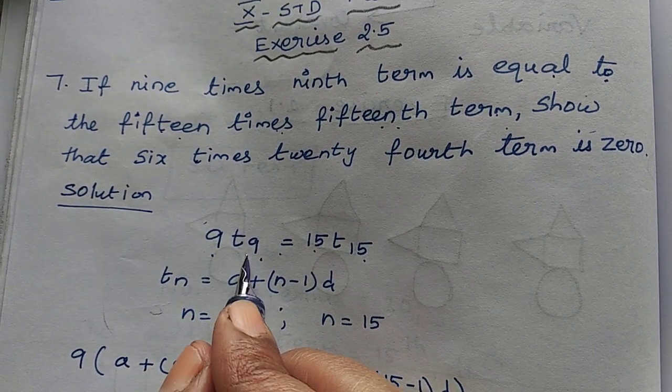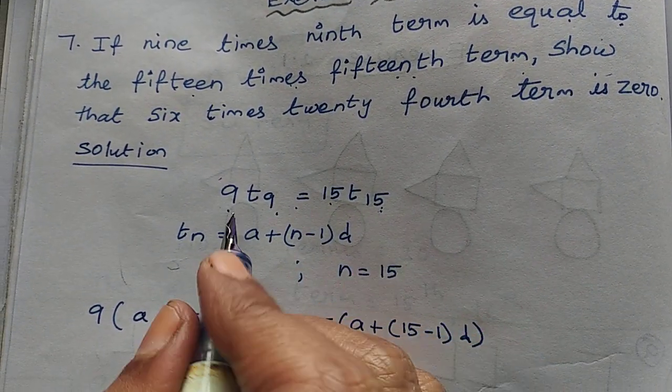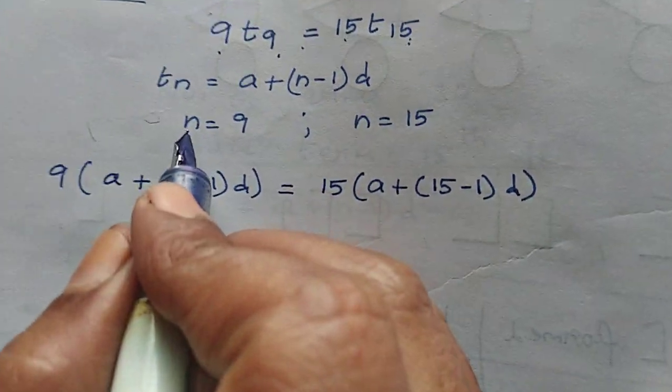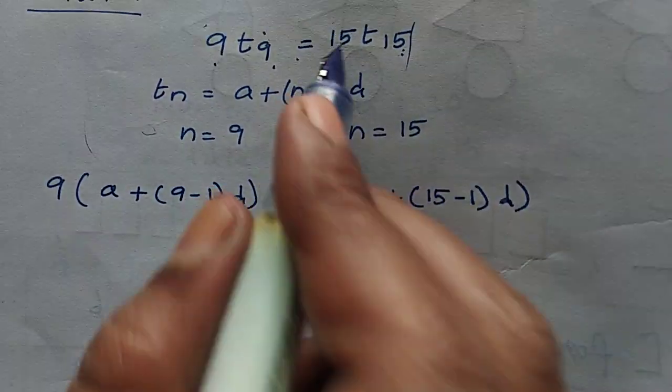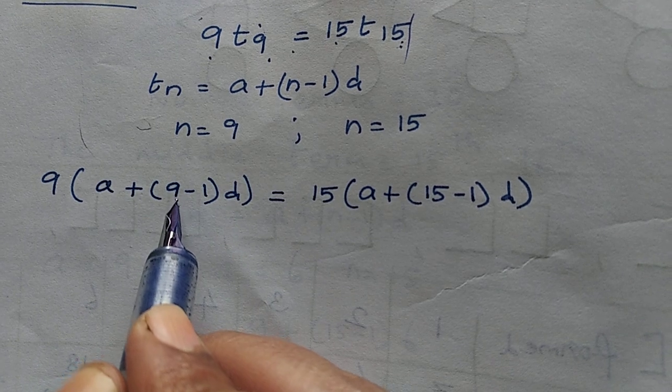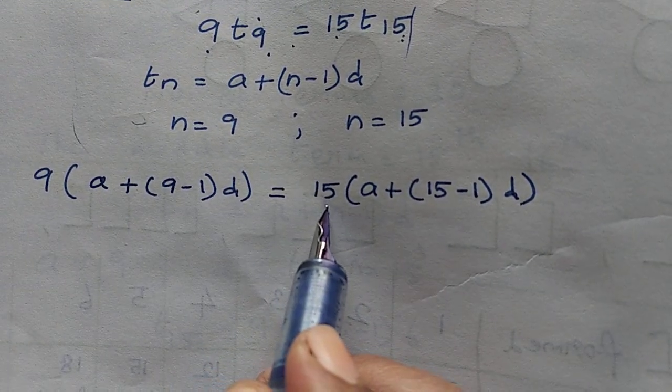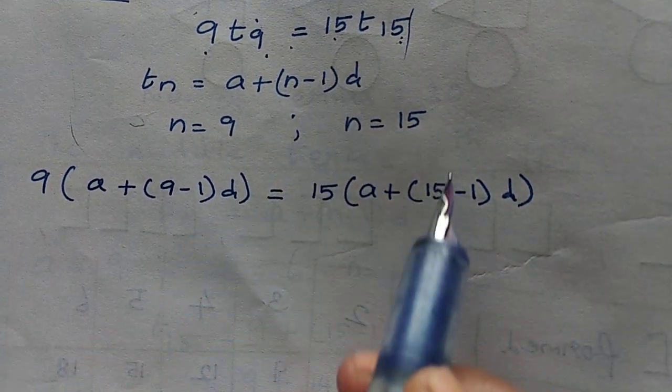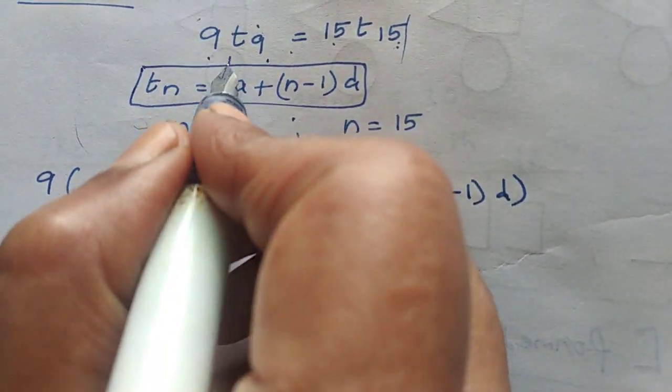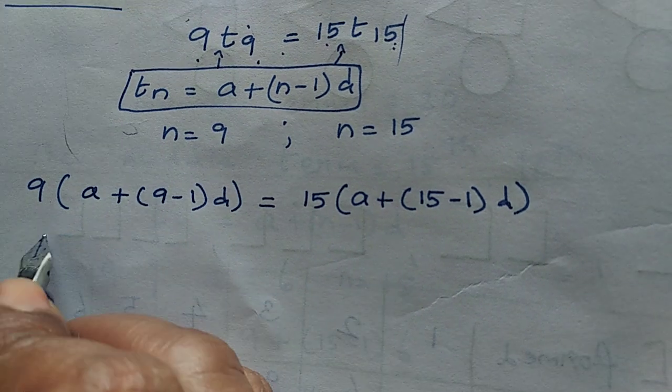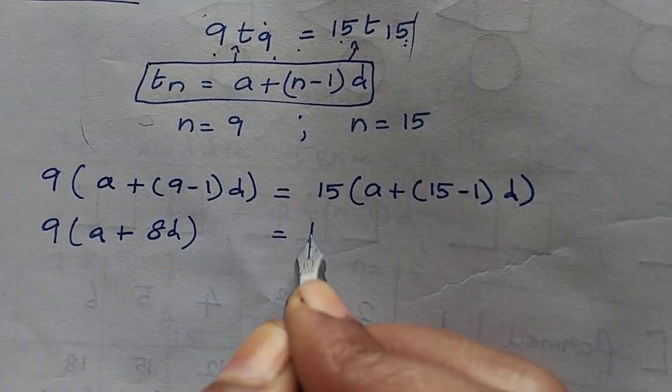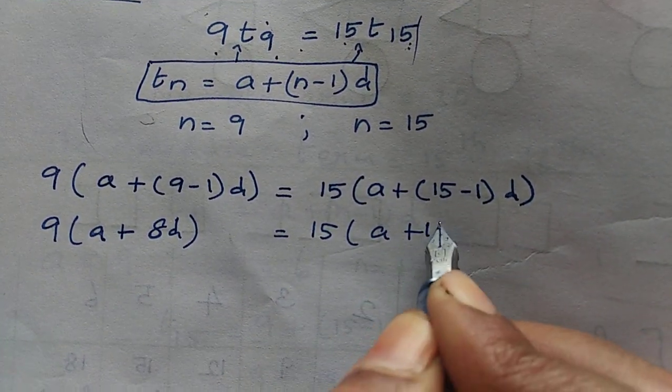So 9th term, 15th term equal, first of all write. T9 is equal to a plus n minus 1d. Now this part is 9th term, this part is 15th term. This formula apply to 9th term: a plus 9 minus 1, 8d equal to 15th term a plus 15 minus 1, 14d.